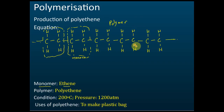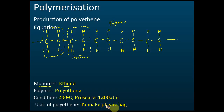This process is polymerization of alkenes. We usually do polymerization on ethene and propene. If we use ethene as the monomer, the polymer formed is called polyethene. The condition for the reaction is 200 degrees Celsius and pressure of 1200 atm. Polyethene is used to make plastic bags.